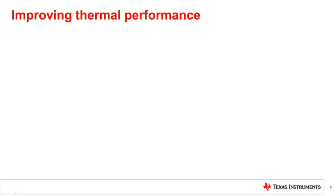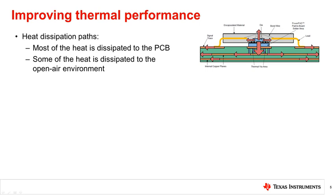Motor drivers are not ideal devices and much of their internal energy is converted to heat. This heat must be effectively dealt with before damage occurs to the driver or any surrounding component. Proper PCB layout can help disperse heat and keep the motor driver at the recommended temperature. The top right image shows different paths that heat takes from the driver, represented by red arrows — the larger the arrow, the more heat traveling through that path. Most of the heat travels down from the thermal pad of the IC and spreads out through the internal and external layers of the board.